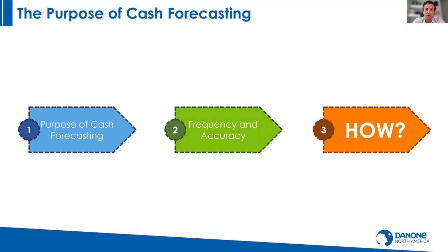Before you start your automation journey as it relates to your forecasting process, it's always important to identify the why, what, and how about forecasting. We need to identify the purpose of cash forecasting — Danone responds to the why — then the what, in terms of frequency, accuracy, and what metrics you're looking to improve, followed by how we do it. Jacob, why don't you walk us through the receivables forecasting process for Danone North America?